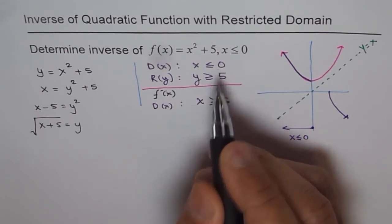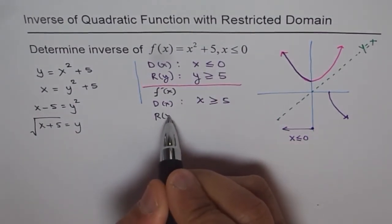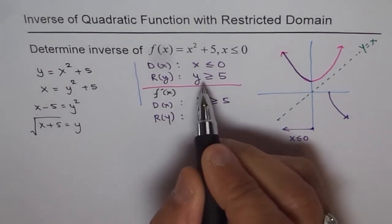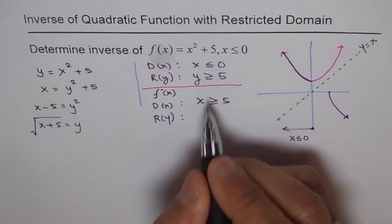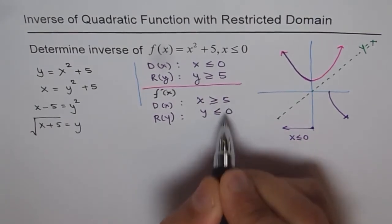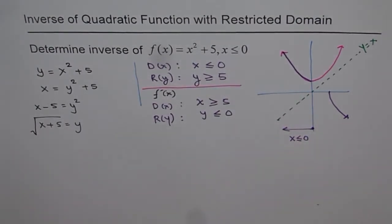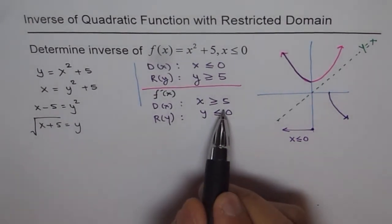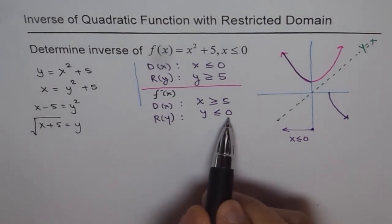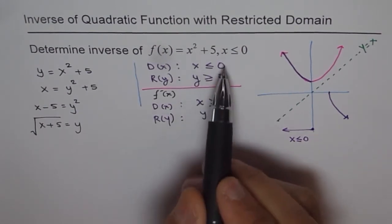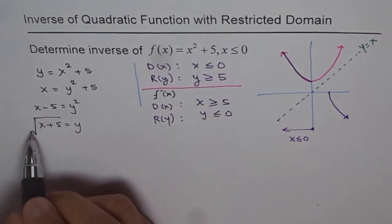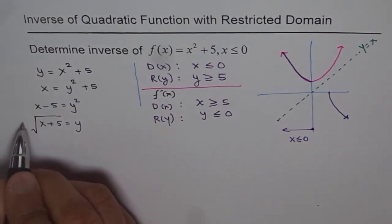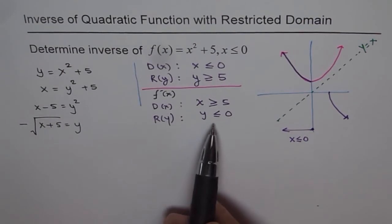The domain and range swap, so the range of the inverse is y ≤ 0. Since the output of our inverse function must be less than or equal to 0, we cannot take the positive square root. We take only the negative square root to satisfy this condition.